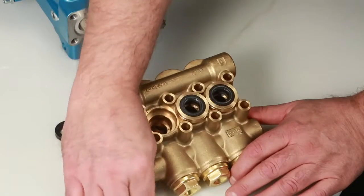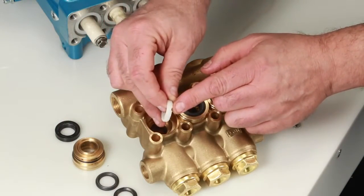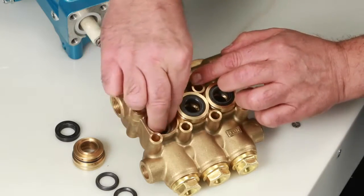To install new seals, begin with the male adapter. You will notice one side has four notches. Install with the notch side down.